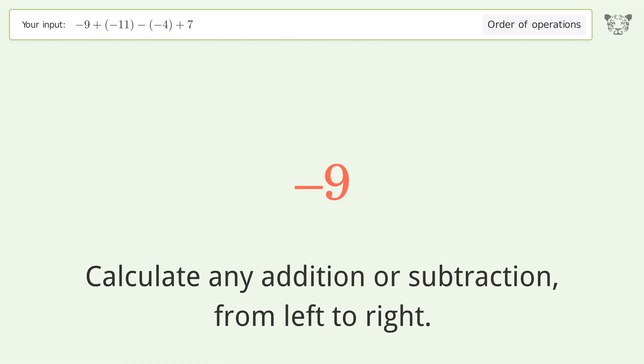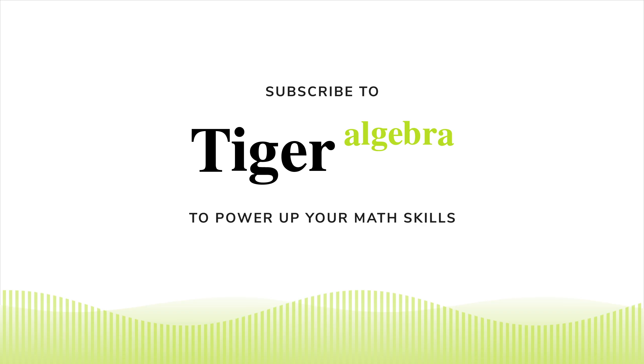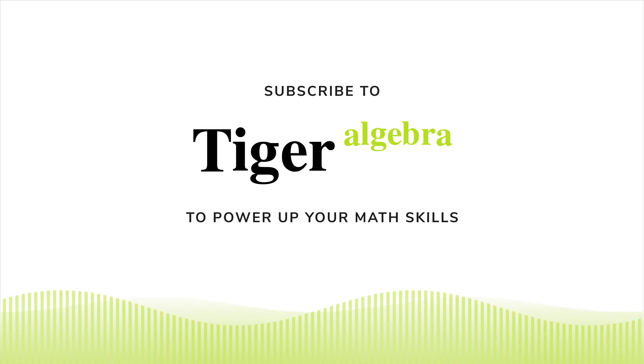Negative 20 plus 4 equals negative 16. Negative 16 plus 7 equals negative 9. And so the final result is negative 9.